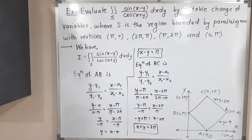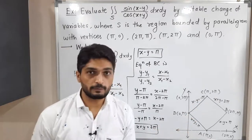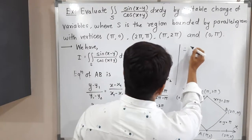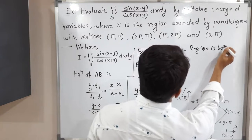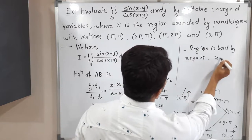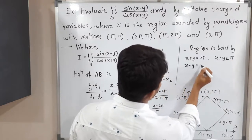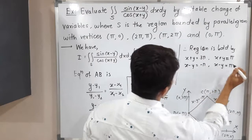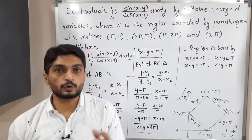Similarly, the equation of line CD is x − y = −π, and the equation of line AD is x + y = π. So the region is bounded by the four lines: x + y = 3π, x + y = π, x − y = π, and x − y = −π.